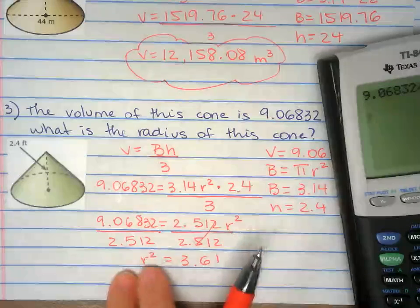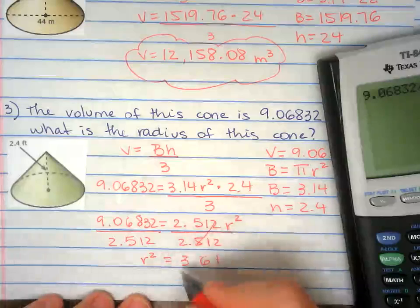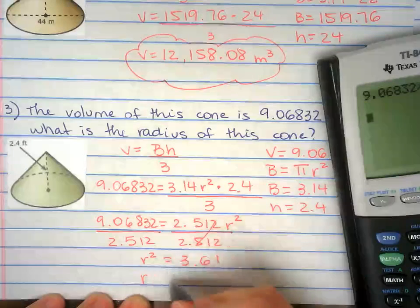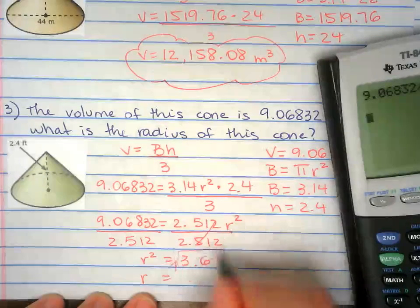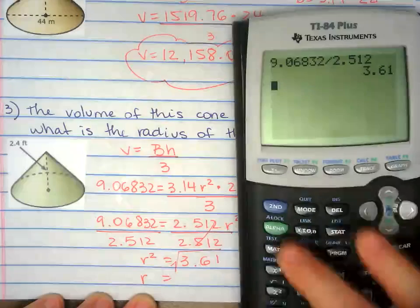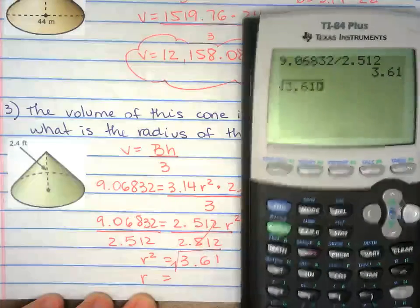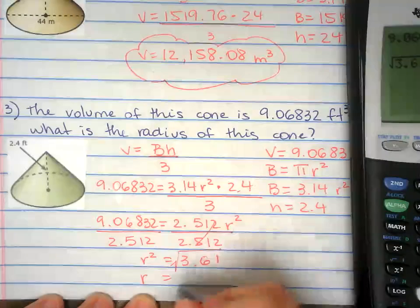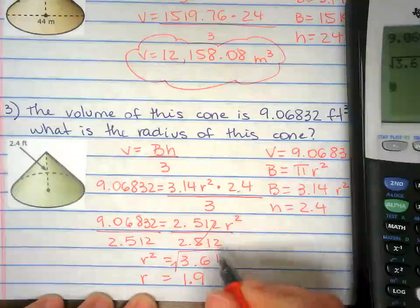Now this is r squared and we're looking for r. So you take the square root of 3.61. 1.9 feet.